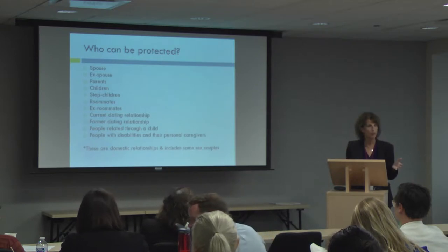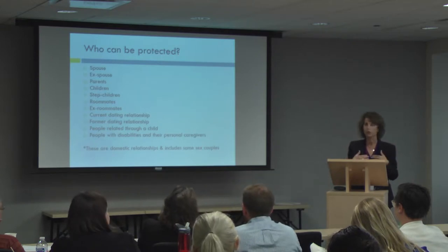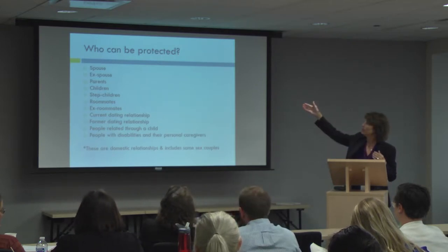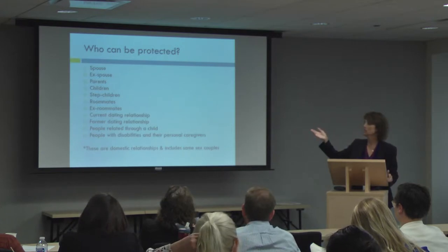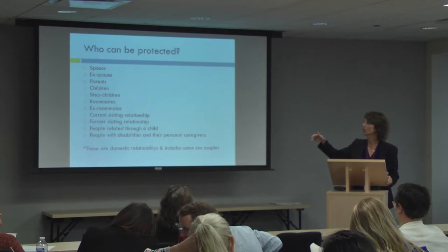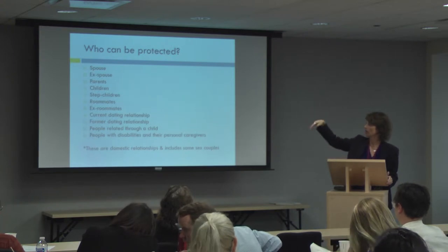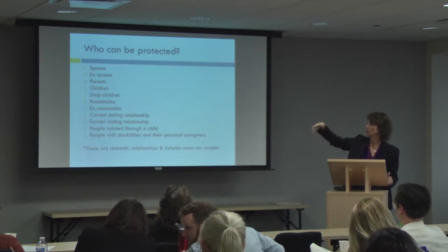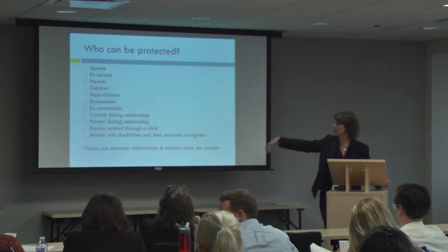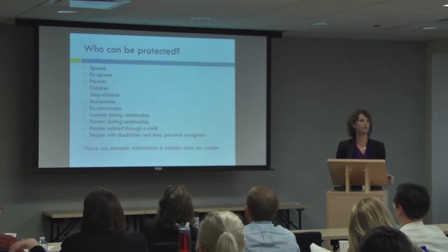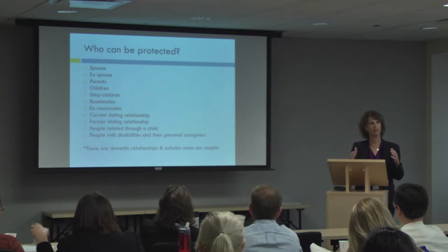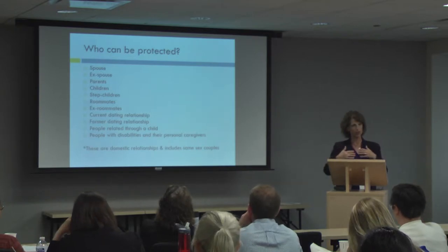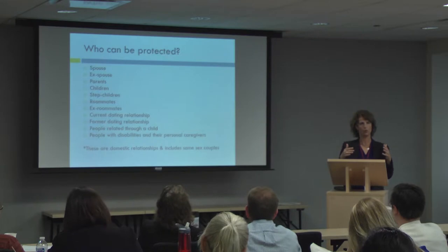To get an order of protection, you have to prove by preponderance of the evidence that you were abused or harassed, and the person doing the abuse has to be a domestic partner — your spouse, ex-spouse, parents, children, stepchildren. It has to be one of these domestic relationships. The Illinois Domestic Violence Act is to protect individuals from being abused by family and household members.